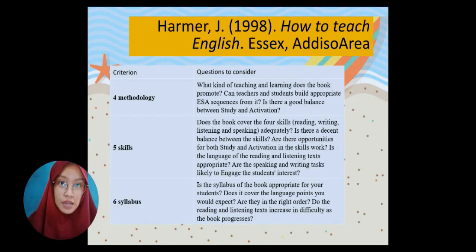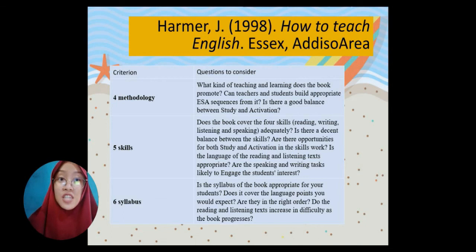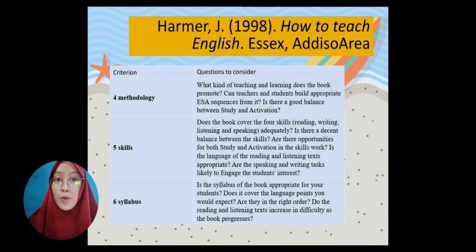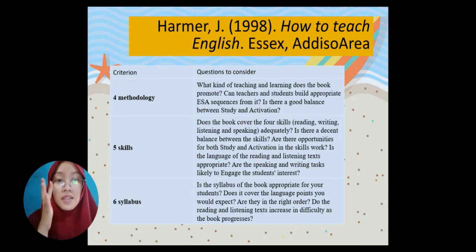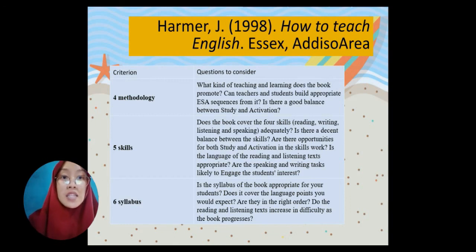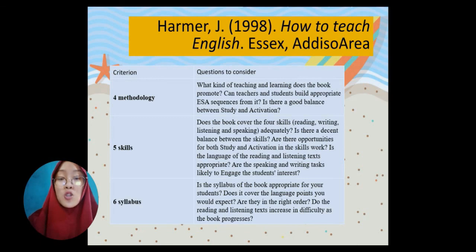The fourth criterion is methodology: what kind of teaching and learning does the book promote, can teachers and students feel comfortable with it, and is there a good balance between study and activation? The fifth is skills: does the book cover the four skills — reading, writing, listening, and speaking? Is the language of the reading and listening texts appropriate, and are the speaking and writing tasks likely to engage students' interest?